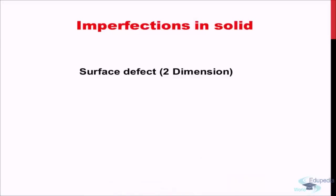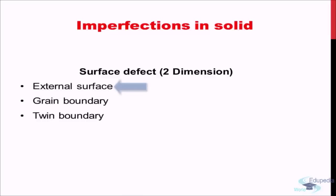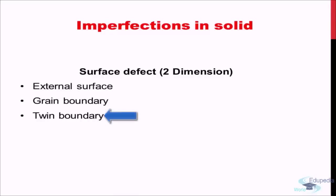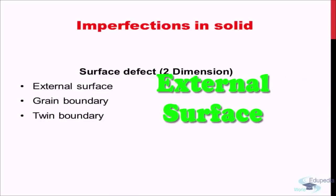Two-dimensional defect is also known as surface defect because a surface is basically two-dimensional. The possible types of surface defects include an external surface — the ending of the specimen — grain boundaries, and twin boundary, which is a special case of grain boundary. Let's start our discussion with external surface.